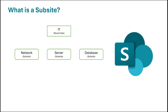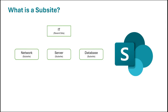By default, the subsites inherit the permissions from the parent site. That means the level of permissions or the groups applied on the parent site will be applicable to the subsites also. But we can break this inheritance so that we can assign different levels of permissions to each site.